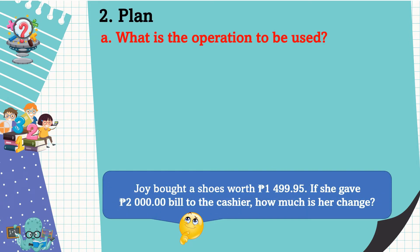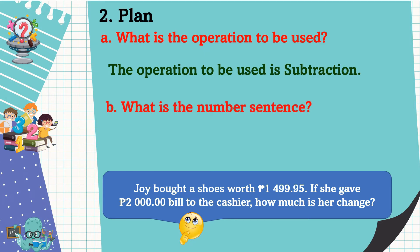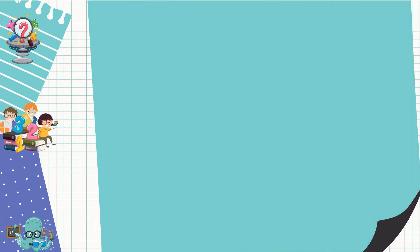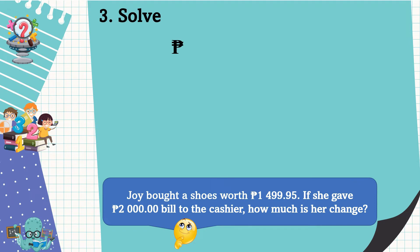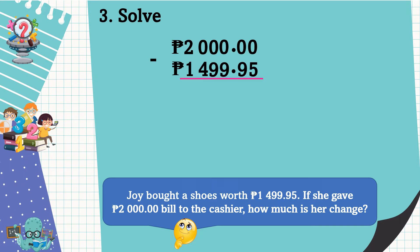We already understand the problem. The next step is to make a plan. The operation to be used is subtraction. The number sentence is 2,000 pesos minus 1,499 pesos and 95 centavos is equal to N. Let's solve the problem. Make sure that the decimal points are aligned. Zero minus 5 cannot be done, so we borrow 1 from non-zero digits, which is 2, and 2 becomes 1. All the zeros except the last become 9, and the last zero becomes 10.